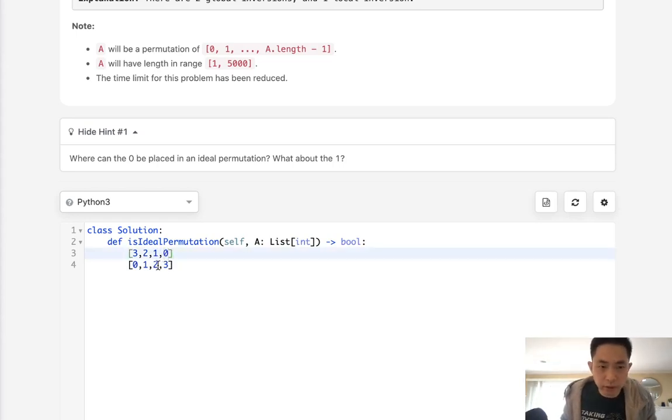We know that if this was greater like here we know it's only one inversion but if it was greater say it was something like, if the difference was like two.